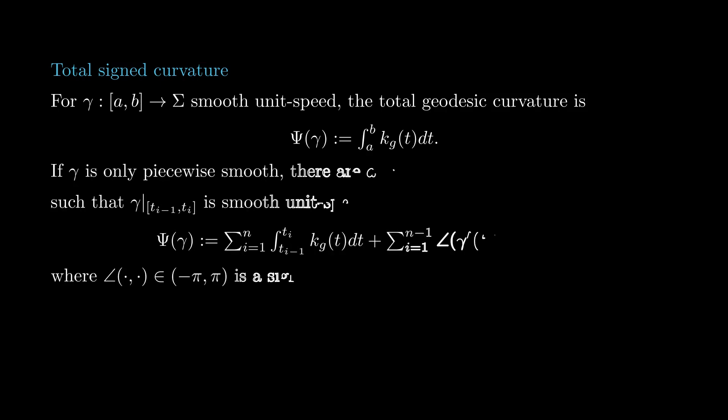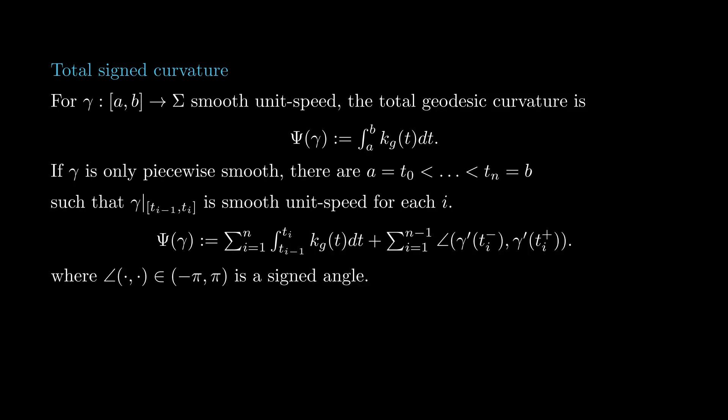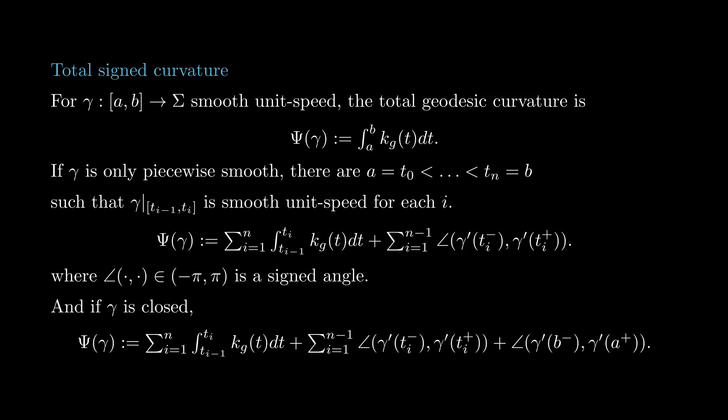Just like we did with total sine curvature in lesson 7, we can also define the total geodesic curvature of a piecewise smooth curve as the sum of the total geodesic curvatures of the smooth pieces plus the angles of rotation at the corners, counted with positive sign when the curve turns left and with negative sign when the curve turns right. In case gamma is closed, we also include the angle at the base point.